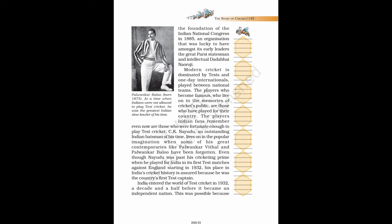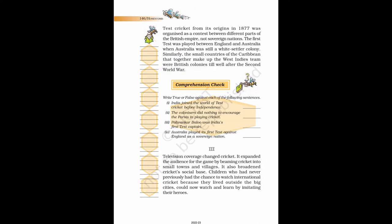India entered the world of test cricket in 1932, a decade and a half before it became an independent nation. This was possible because test cricket from its origins in 1877 was organized as a contest between different parts of the British Empire, not sovereign nations. The first test was played between England and Australia when Australia was still a white settler colony. Similarly, the small countries of the Caribbean that together make up the West Indies team were British colonies till well after the Second World War.